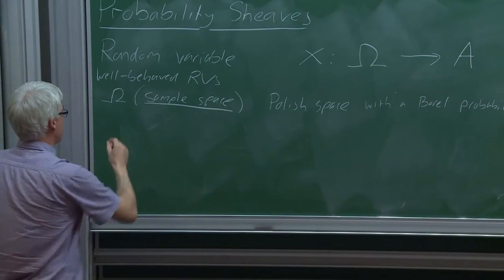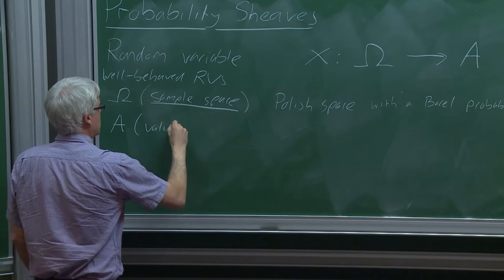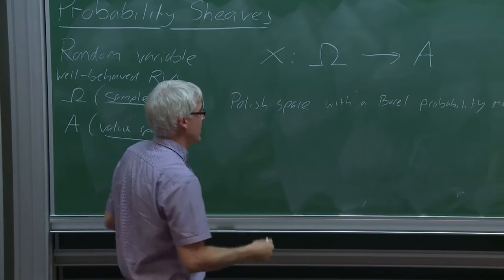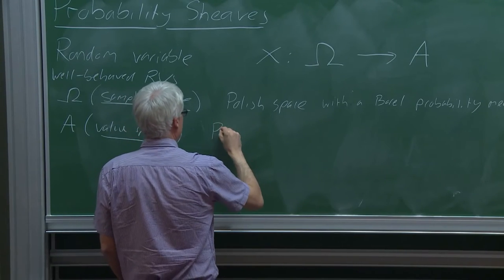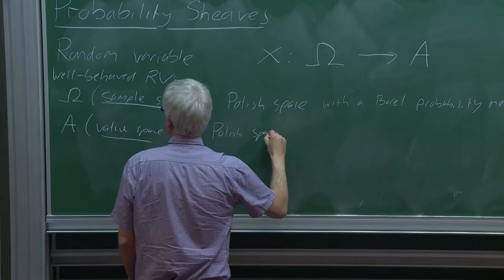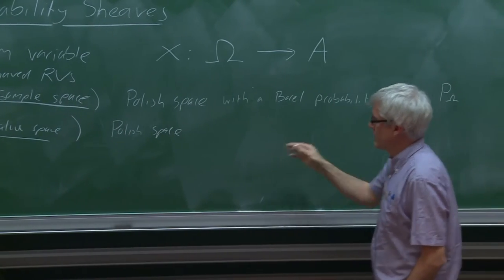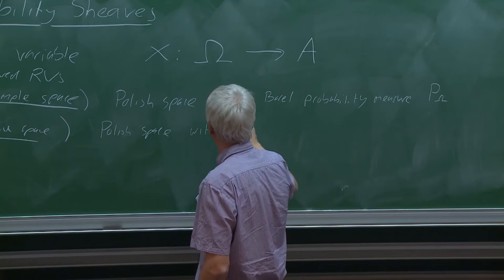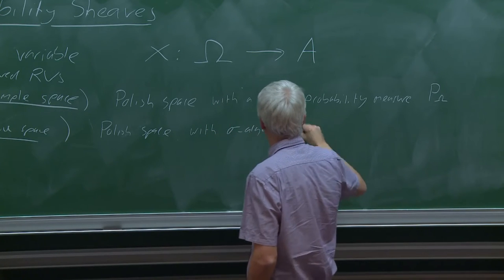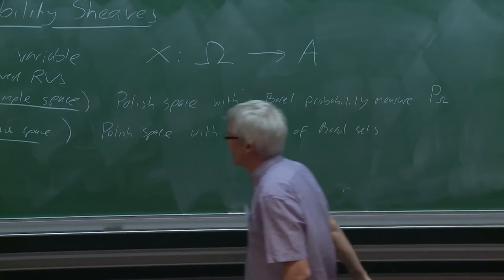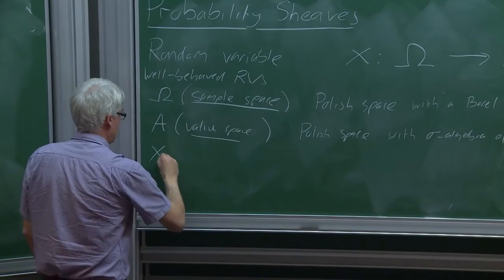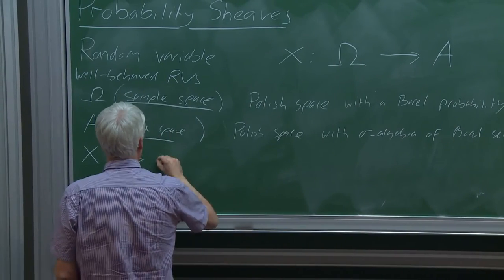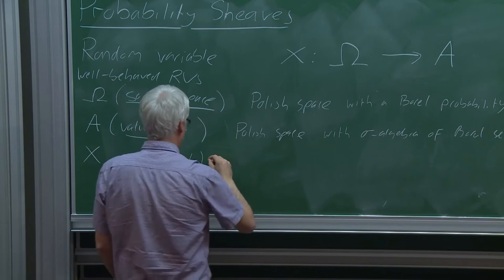The value space A I'm likewise going to assume is a nice space — again I mean a Polish space — together with the sigma-algebra of Borel sets. And X is a Borel measurable function, so inverse image preserves Borel sets. I'm going to drop 'Borel' in future when I talk about measurable.